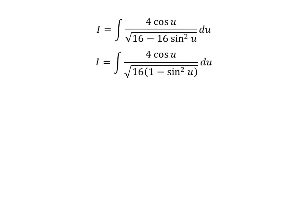Taking out the common factor 16 in the denominator gives us i is equal to integral of 4 times cosine of u upon square root of 16 times 1 minus square of sine of u. We know the famous trigonometry identity: 1 minus square of sine of u is equal to square of cosine of u. So, i is equal to integral of 4 times cosine of u upon square root of 16 times square of cosine of u.